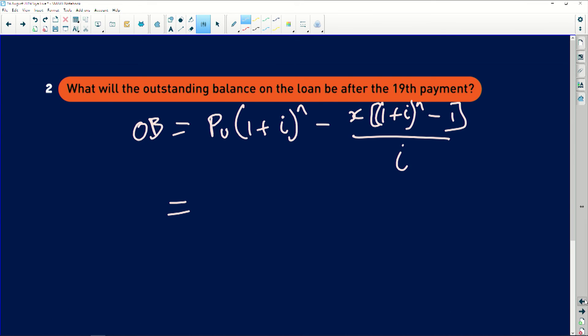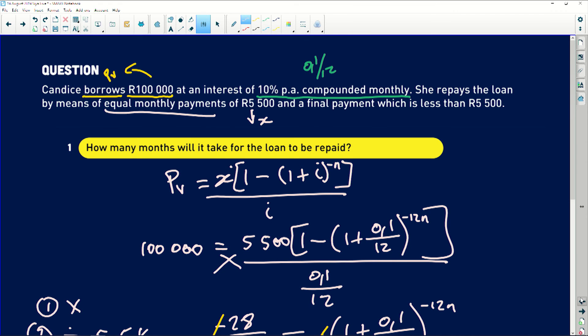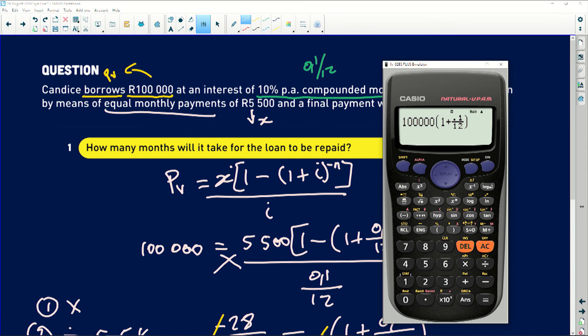So here they said 19th payment, right? So I have the 19th payment. So to the exponent of 19 and then minus 5,500 into 1 plus 0.1 divided by 12 to the exponent of 19 minus 1 close bracket and then 0.1 divided by 12. And this will be equals to.